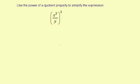Use the power of a quotient property to simplify the expression. Notice you have x squared divided by y, all applied to the third power. What happens here is you can distribute this 3 to both the x squared and the y, giving you x squared to the third power over y to the third power.